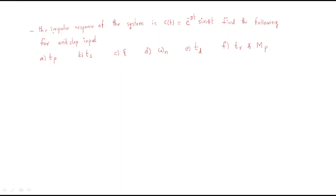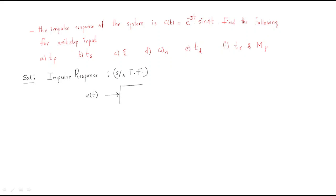In this session we will discuss another model problem. The impulse response of the system is c(t) = e^(-3t) sin(4t). We need to find the following for the unit step input. The impulse response represents the system transfer function. For this system, we apply the unit step input u(t).